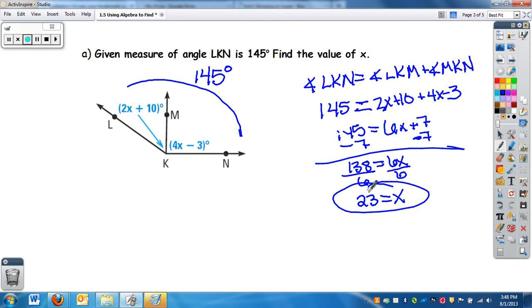Now on here I said only to find the value of X. But if I would ask you to find what each one is, we would just plug in 23. You can do it just to check: this is 46 plus 10, which is 56. And then this one would be 23 times 4, which would be 92 minus 3 is 89. 89 plus 56 is 145. So I know I have the correct answer.